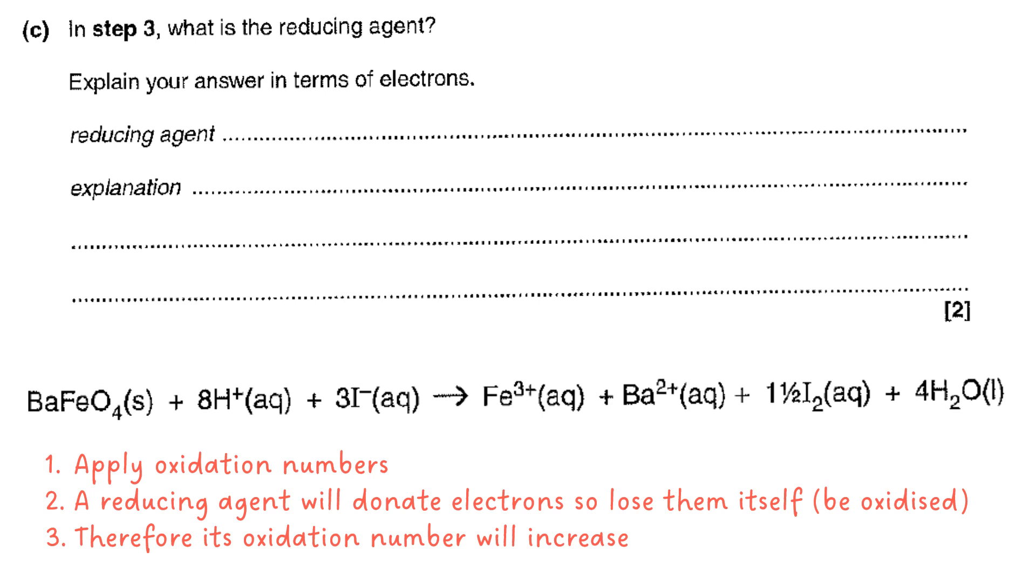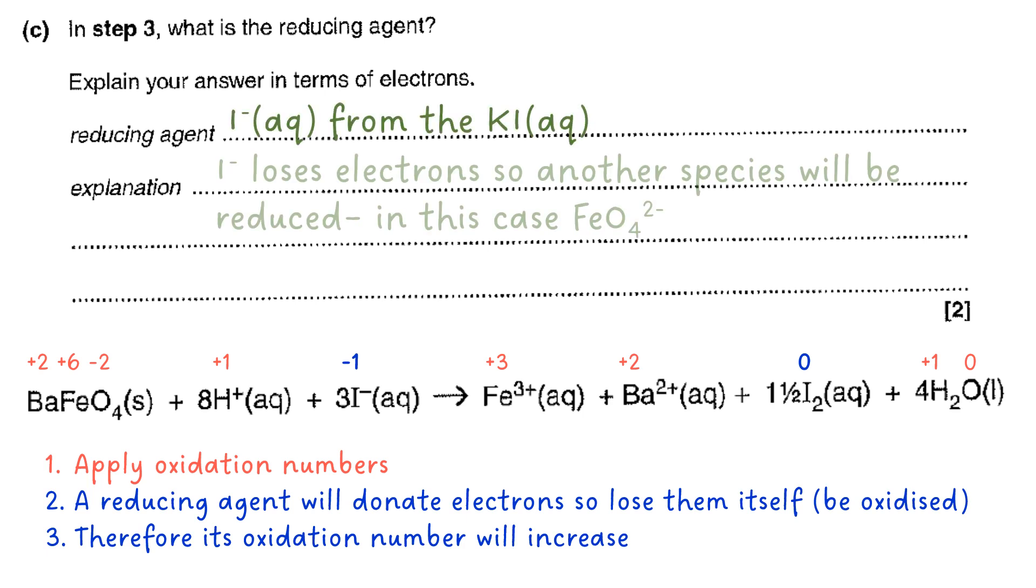So to work this out we need to apply oxidation numbers to everything so we can see where that's happening. And having a quick look you can see that it's actually the iodide. So therefore we need to explain that in terms of step three not just say that it loses electrons. The other species that's being reduced is the FeO4^2-.